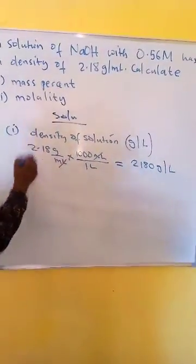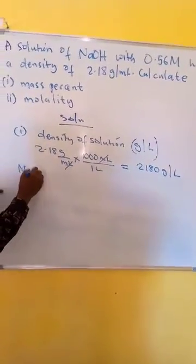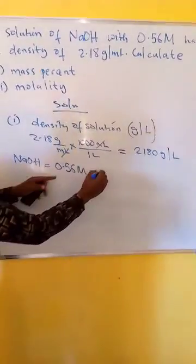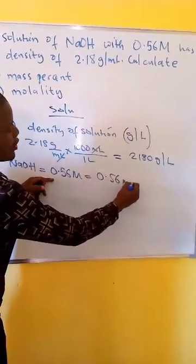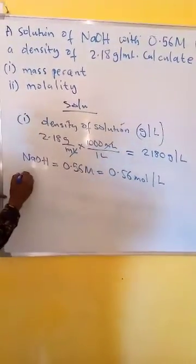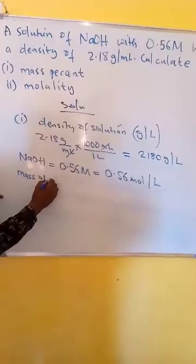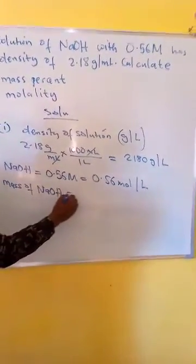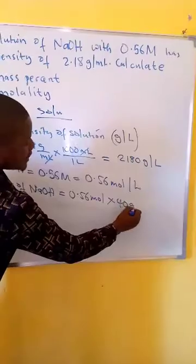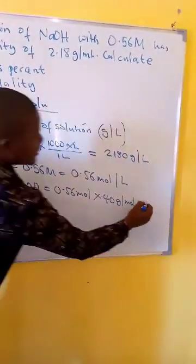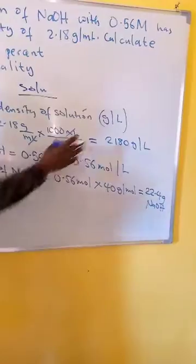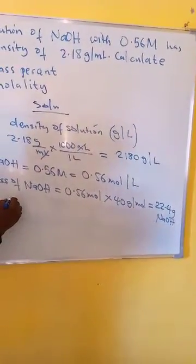The concentration or molarity of sodium hydroxide is 0.56 molar, which is the same as 0.56 moles per liter. So we have 0.56 moles of sodium hydroxide in 1 liter. We can use that to calculate the mass of sodium hydroxide, which is equal to moles times molar mass: 0.56 times 40 grams per mole, giving us 22.4 grams of sodium hydroxide.